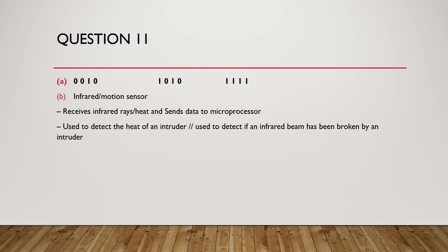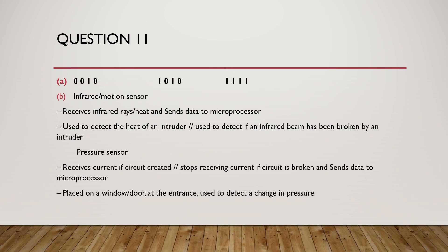Part B: Identify sensors the security system could use to detect intruders and describe how each could be used. Sensor one: an infrared motion sensor — receives infrared signals and sends data to the microprocessor, used to detect the heat of an intruder. Or a pressure sensor — completes a circuit when intact and breaks when triggered, sends data to the microprocessor, placed on a window or door, used to detect a change in pressure.